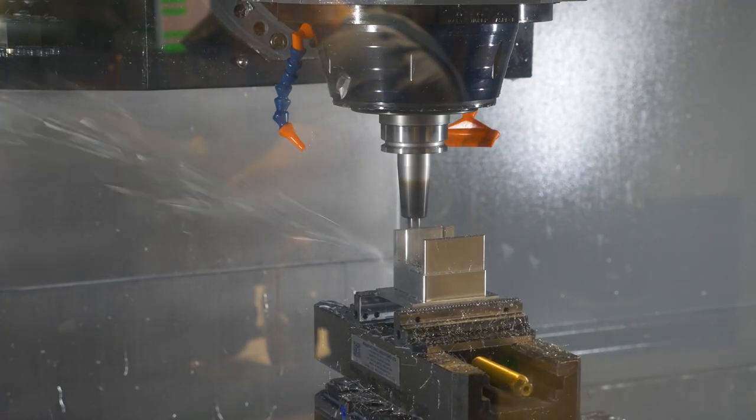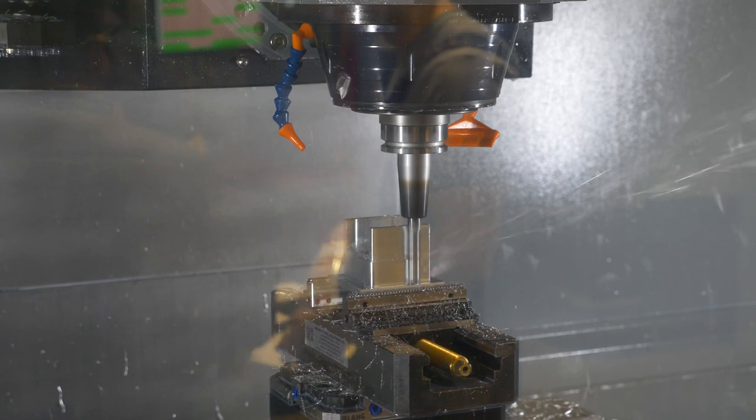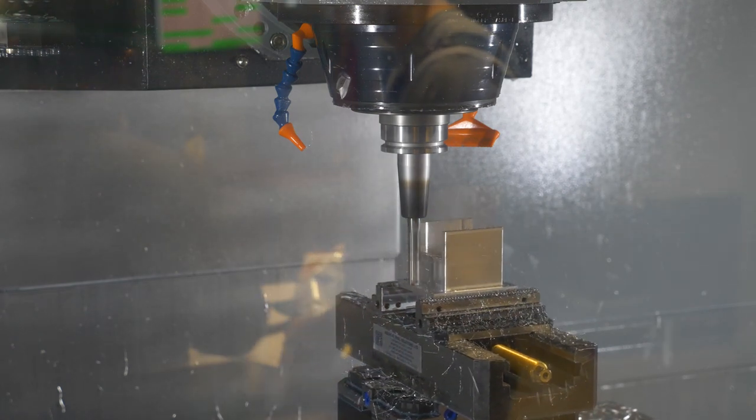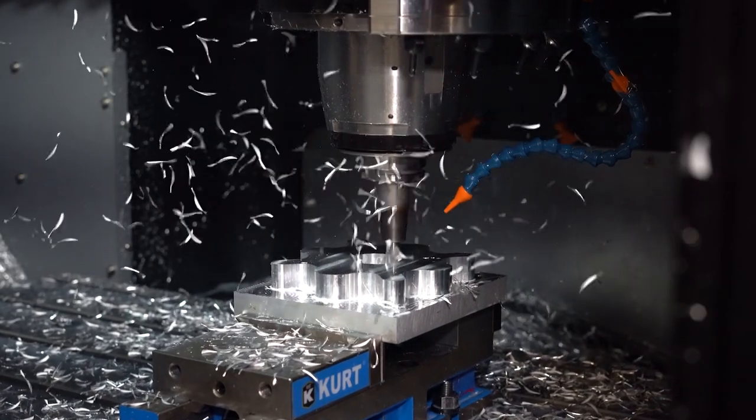Next we have end mills. Think of end mills as the workhorse of CNC tooling because this type of tooling can create many different feature types. End mills come in many different shapes and sizes. Some have square bottoms and others are rounded.